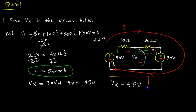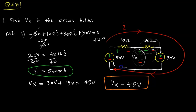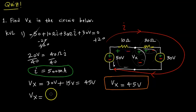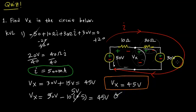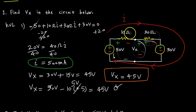Let me verify from the other side to make sure there's no conflict. Starting at the reference node and going up: I see a rise of 50 volts, then going plus-to-minus I have a drop. So VX equals 50 volts minus 10 times I — that's 10 times 0.5 which is 5 — so 50 minus 5 equals 45 volts. We're indeed getting the correct answer. As a quick aside, you could also use KCL: the current equals 50 minus VX over 10 ohms, and that also equals VX minus 30 over 30 ohms. Solving, you get 150 minus 3VX equals VX minus 30, giving 4VX equals 180, so VX equals 45 volts.